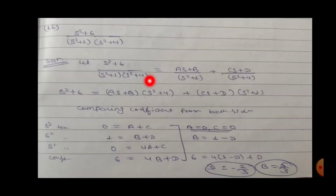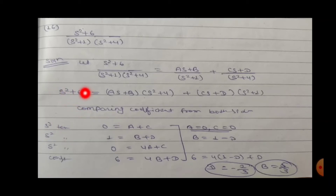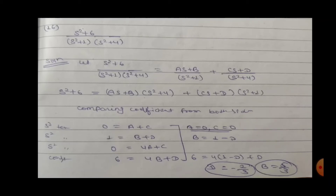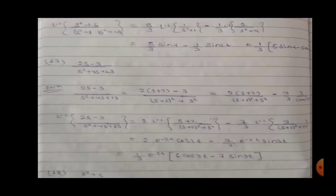Question 16: (s²+6)/[(s²+1)(s²+...)] using partial fractions (As+B)/(s²+1) plus (Cs+D)/(s²+1). Multiplying and comparing coefficients: s³ term gives A plus C equal to zero; comparing s², s, and constant terms, we get A=0, C=0, B=5/3, D=-2/3. The Laplace inverse gives sin(2t) type result.